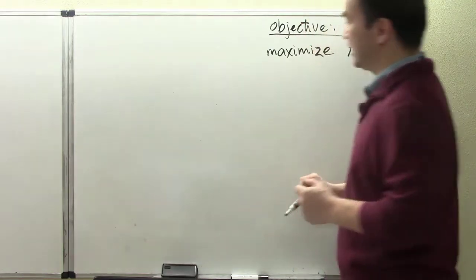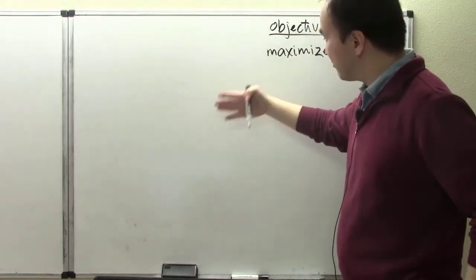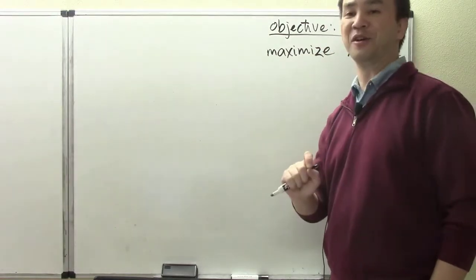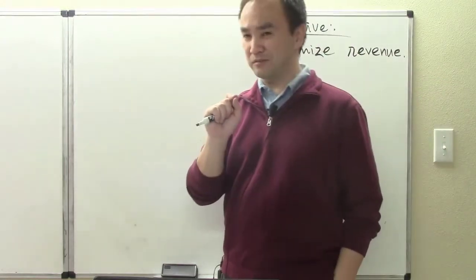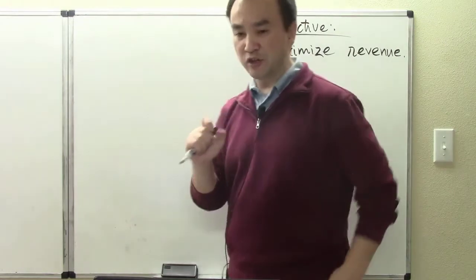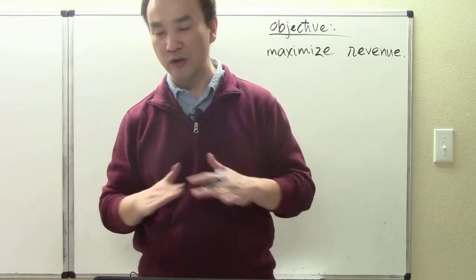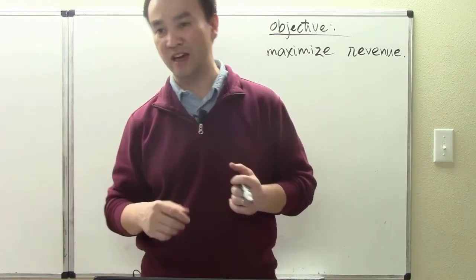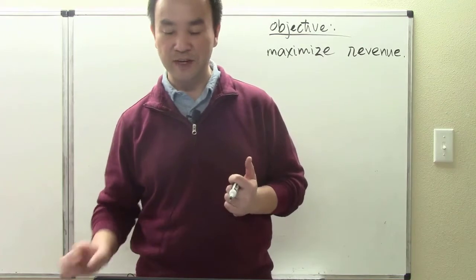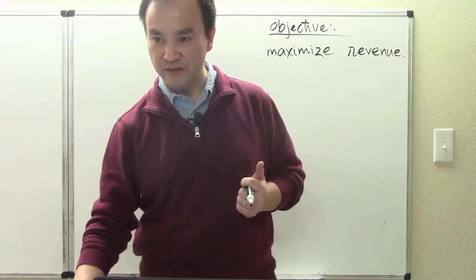Maximizing revenue is our goal. But after identifying the objective, we need to hunt for our objective function, which will take a little while. The reason I introduced that this example is suitable for business students is because business major students have learned techniques to derive functions in your own field — how to derive these functions as a professional in the business field.